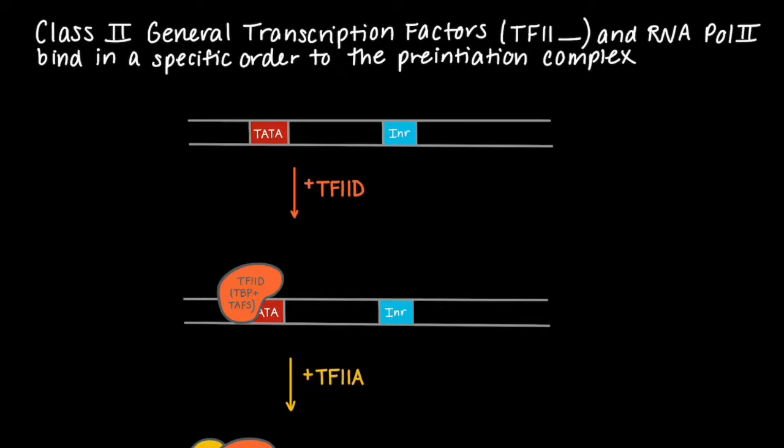Before we look at the data, let's briefly talk about the general transcription factors that form the pre-initiation complex. These factors follow the naming pattern TF2 and then some letter. These general transcription factors also bind to the pre-initiation complex in a specific order.